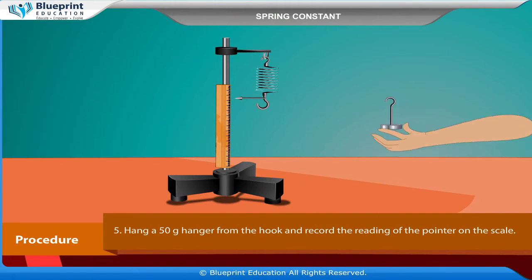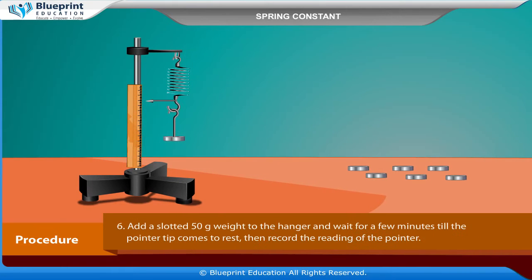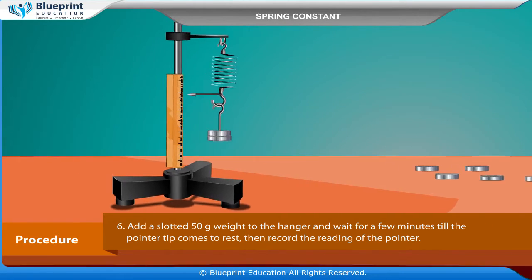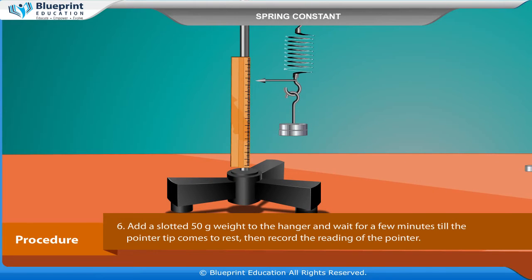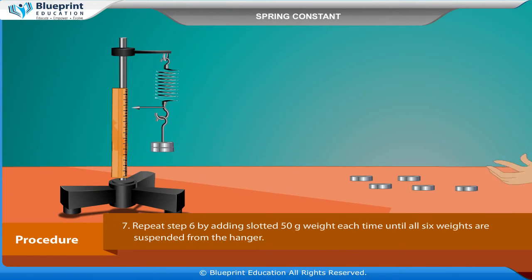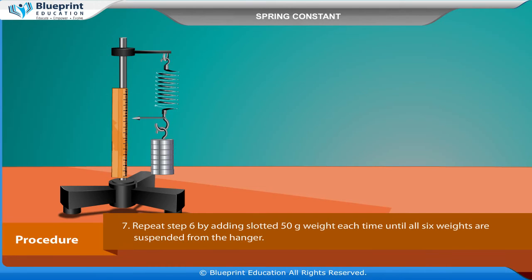Hang a 50 gram hanger from the hook and record the reading of the pointer on the scale. Add a slotted 50 gram weight to the hanger and wait for a few minutes until the pointer tip comes to rest, then record the reading of the pointer. Repeat by adding a slotted 50 gram weight each time until all 6 weights are suspended from the hanger.